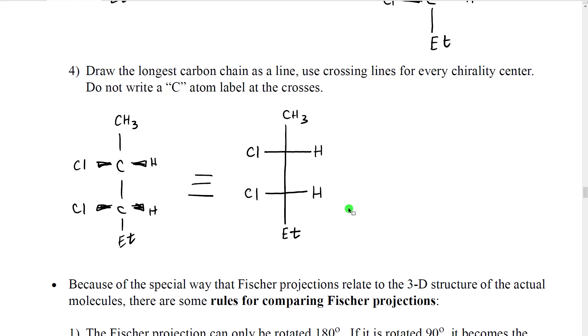So it looks something like this. You can see all the dashes and wedges are now gone. However, they are implied to be on the molecule. Specifically, it is implied that the two groups that are horizontal, in other words going left and right, are on wedge bonds pointing toward our face.